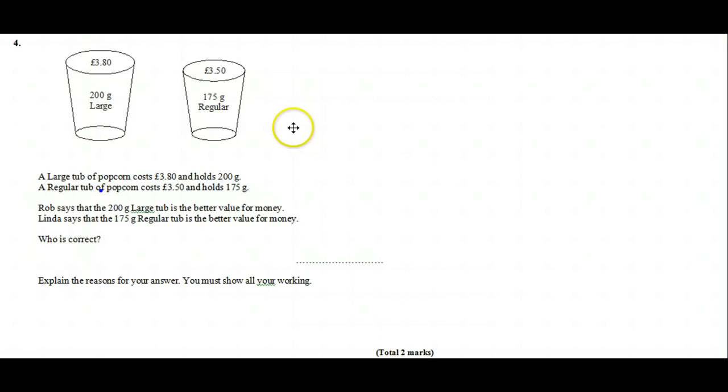Hi there, this is a maths question involving proportion. We need to work out which of the two tubs of popcorn is better value. Rob says the 200 gram large tub is better value than the 175 gram regular tub.